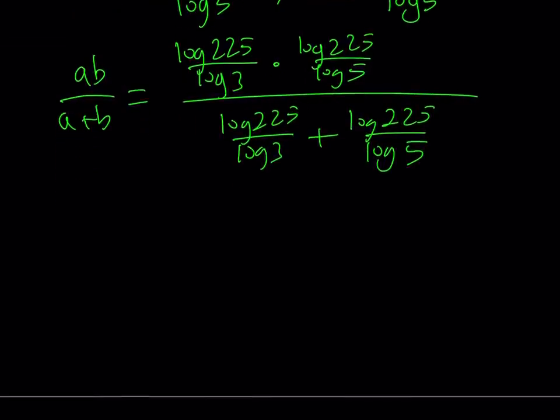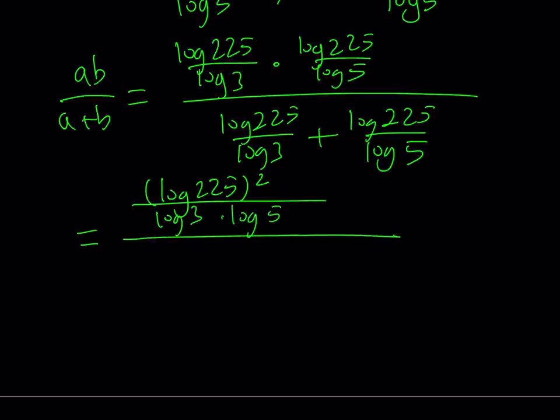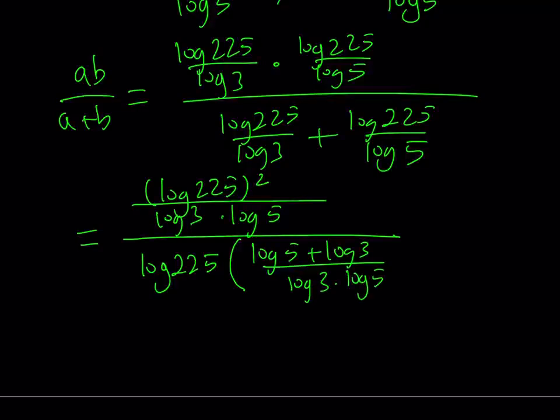In the numerator, I can just multiply those two quantities. That means log 225 squared divided by log 3 times log 5. The bottom one, we need a common denominator. Let's take out log 225 as a common factor. We get 1 over log 3 plus 1 over log 5, which gives us log 5 plus log 3 divided by log 3 times log 5.